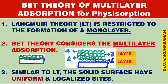This BET adsorption theory is applicable for, and is applied to, physical adsorption. Physical adsorption is also called physisorption. In physisorption, multilayer adsorption takes place. Whereas in Langmuir adsorption theory, it is restricted to formation of a unimolecular layer — it forms only a monolayer. Whereas in BET theory, there is multilayer adsorption.